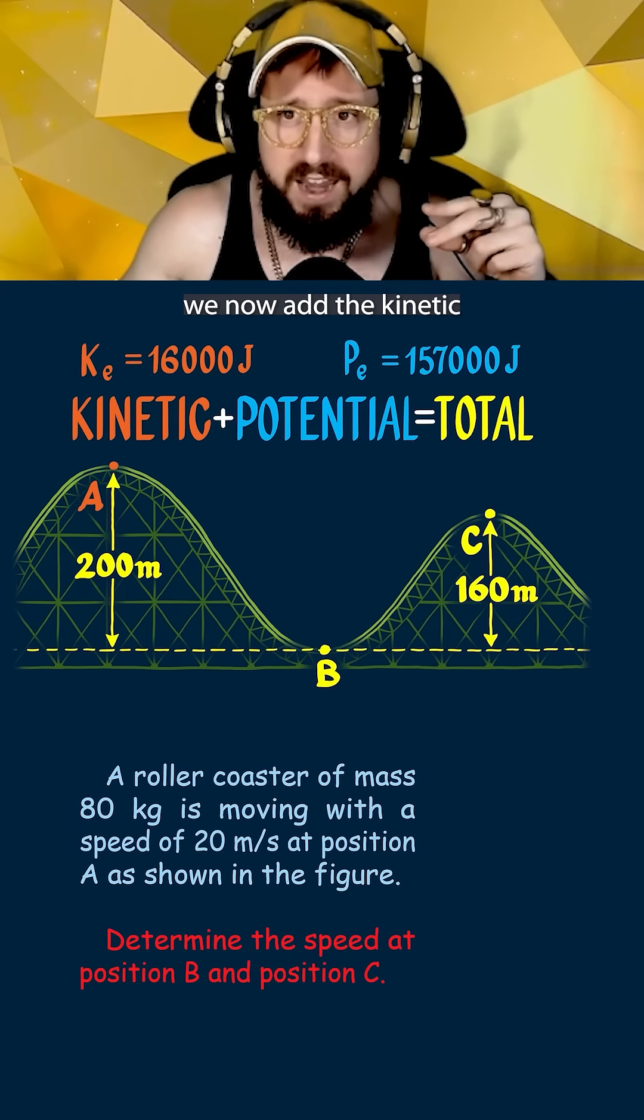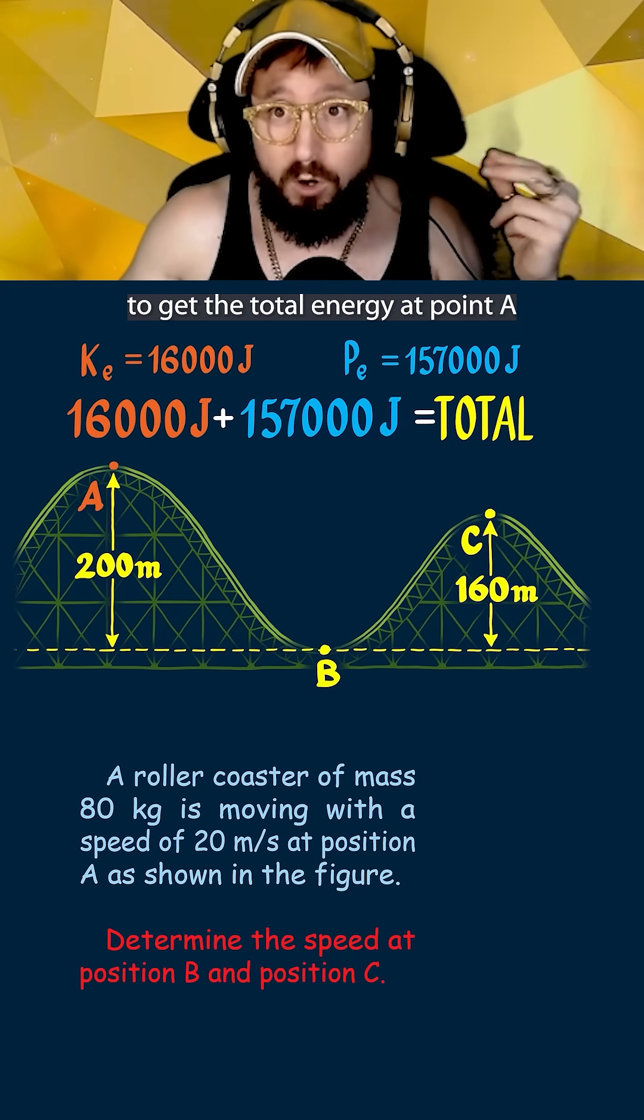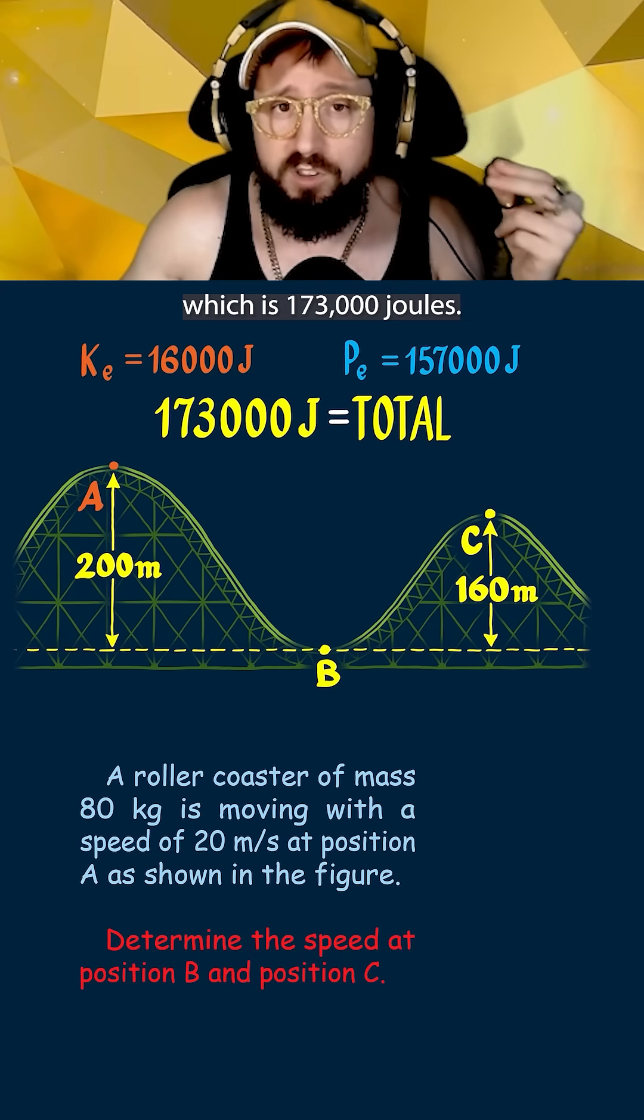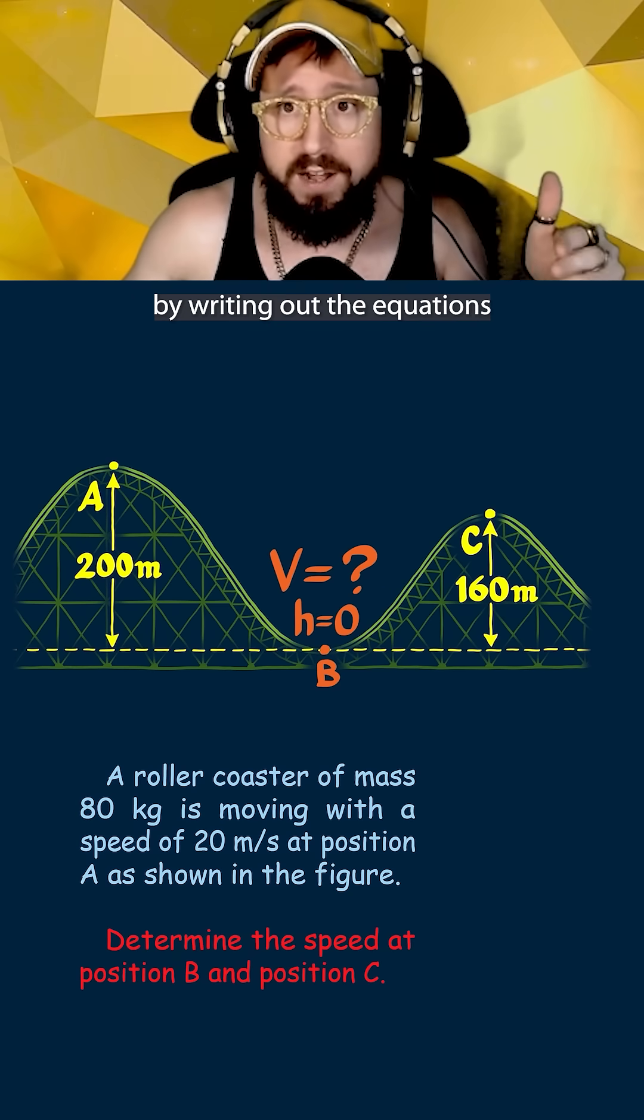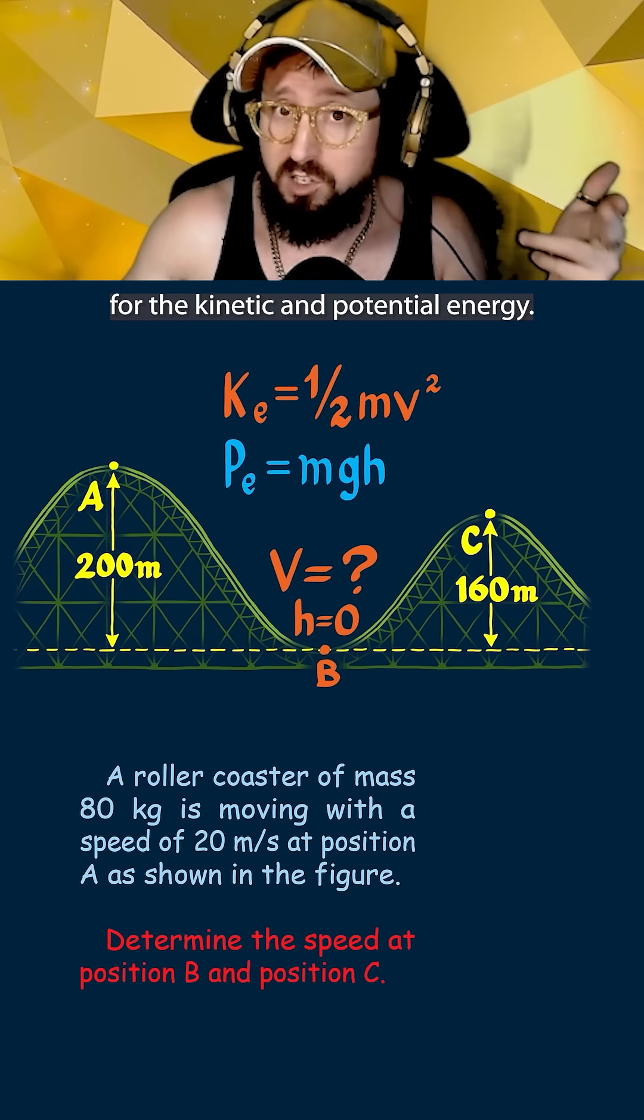So moving on we now add the kinetic and potential energy together to get the total energy at point A which is 173,000 joules. Looking at point B we're asked to find the velocity which we will figure out by writing out the equations for the kinetic and potential energy.